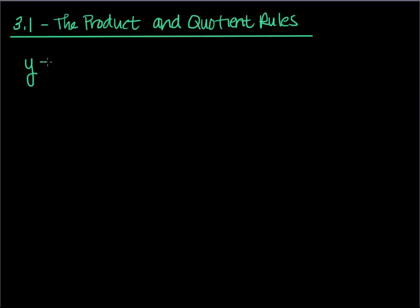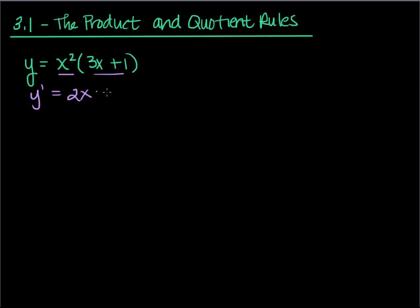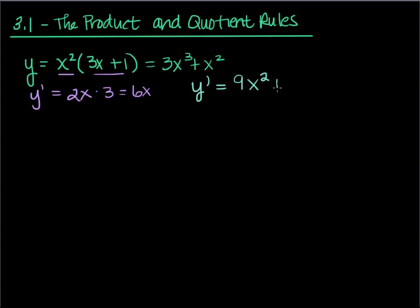So the idea here is, let's say I have y equals x squared times the function 3x plus 1, and I want to take the derivative of this. Up until now, we've had to actually foil this x squared through and then take the derivative. Notice we cannot — if I try and do y prime of x squared, which is 2x, times the derivative of 3x plus 1, which is 3, this says that my derivative is 6x. But if we take the x squared through, my function is actually 3x cubed plus x squared, and the actual derivative would be 9x squared plus 2x.